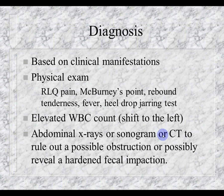An elevated white blood count with a shift to the left means too many immature white blood cells — bands or stabs — occurring with an overwhelming acute infection. Look for a count of 15,000 or greater. Abdominal x-rays, sonograms, and CTs are used to rule out possible obstruction. Other clinical manifestations include fever, rigid abdomen, decreased or absent bowel sounds, vomiting typically following the onset of pain, constipation or diarrhea, tachycardia, rapid breathing, lethargy, irritability, and guarding posture.